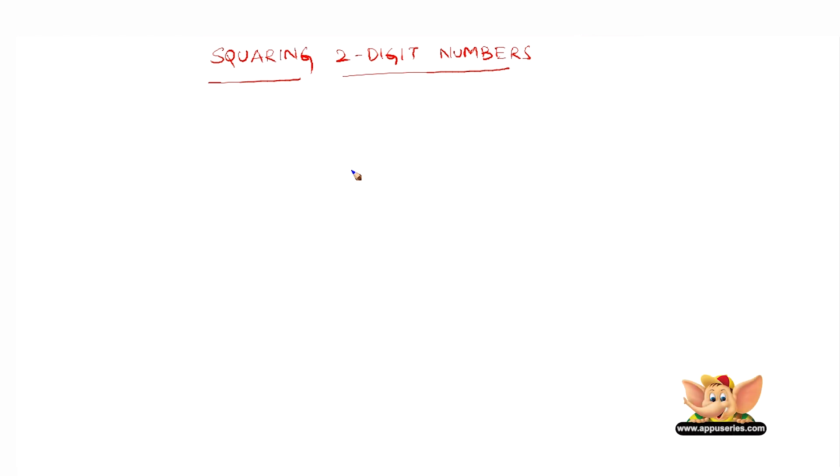Here let us see how to square two-digit numbers in a very easy way. Let us take the first example of 98.